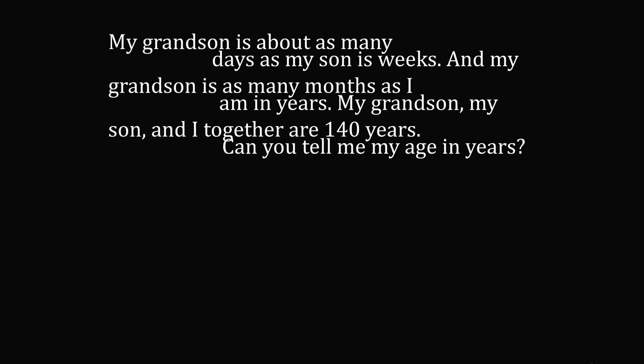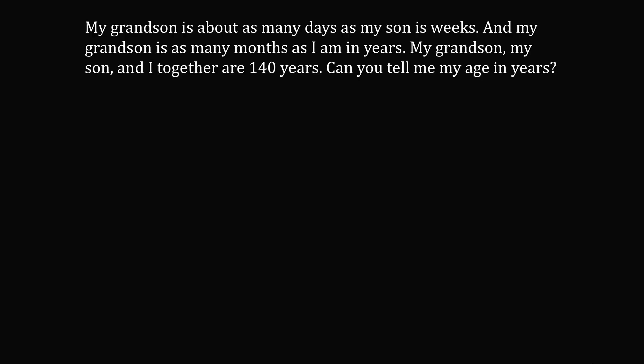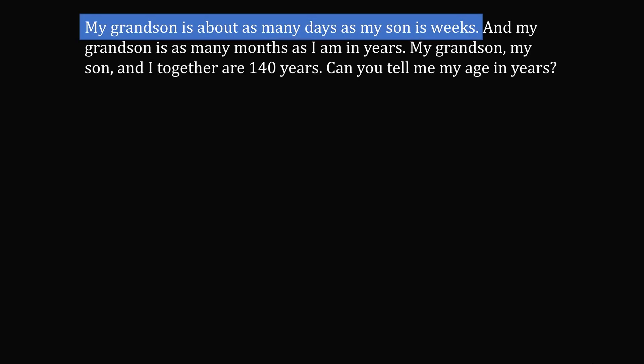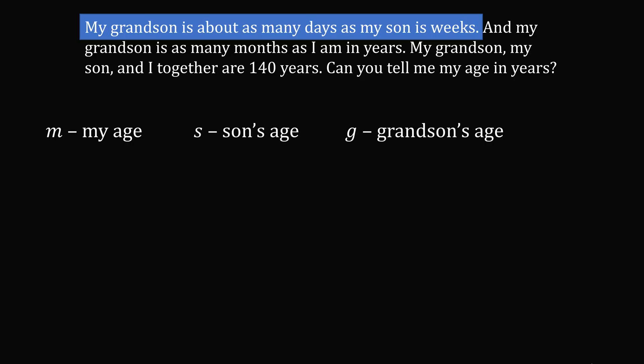So let's work this problem out step by step. The first sentence is: my grandson is about as many days as my son is weeks. So there are three people in this problem. Let's set up variables for each person. Let m be equal to my age, let s be the son's age, and let g be the grandson's age. And we want all of these ages to be in years.